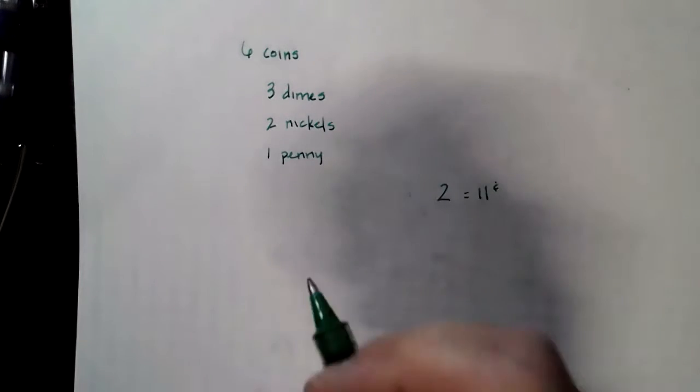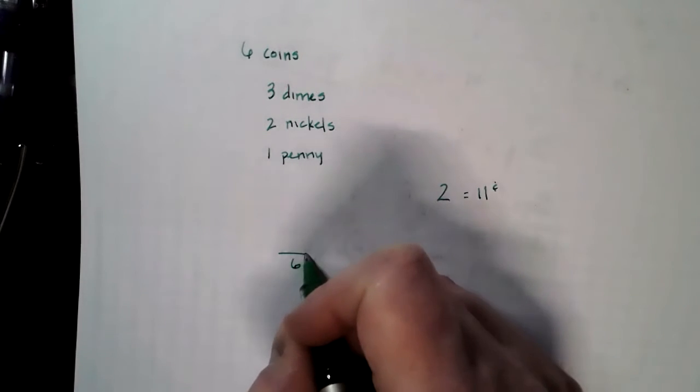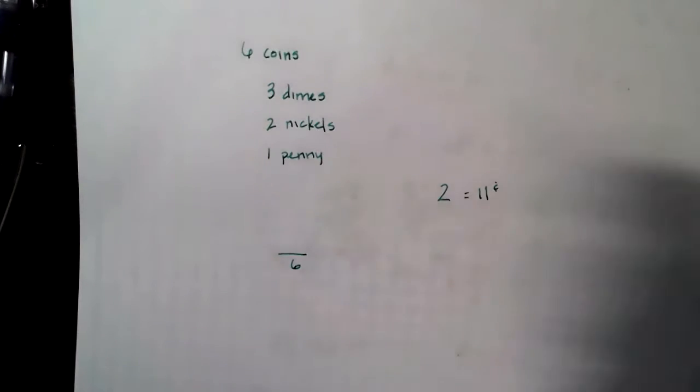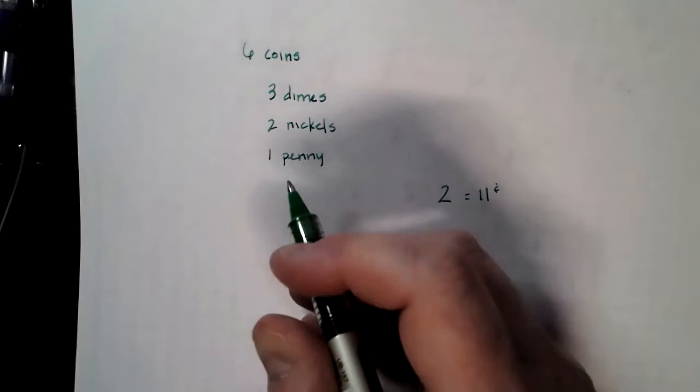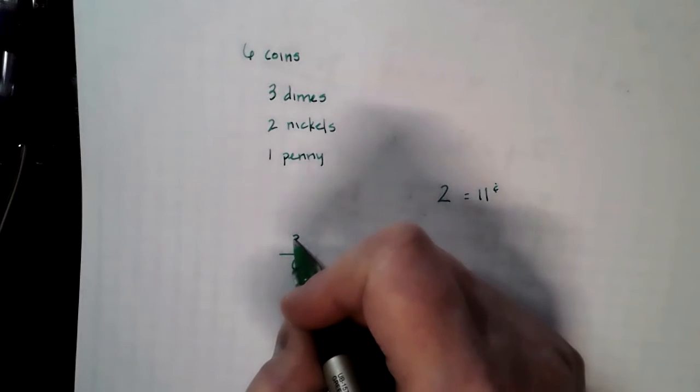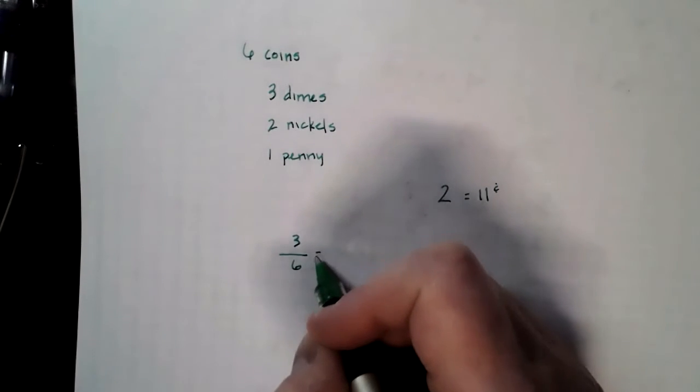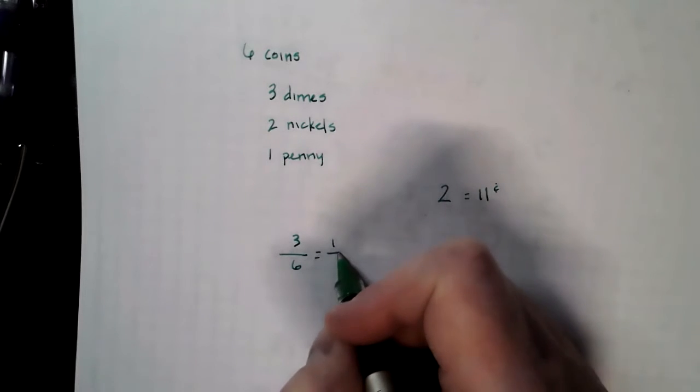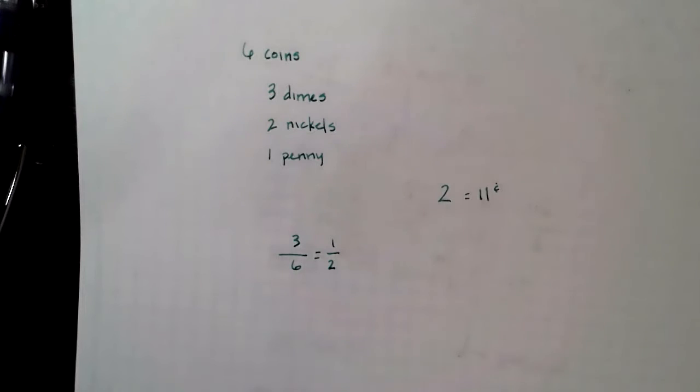We know we have six coins. That's going to be the number at the bottom of our fraction or ratio. Let's say we pull a dime first, which means we've got three out of six shots of pulling a dime. That's going to be three over six or one half. We have a 0.5 probability of pulling a dime.